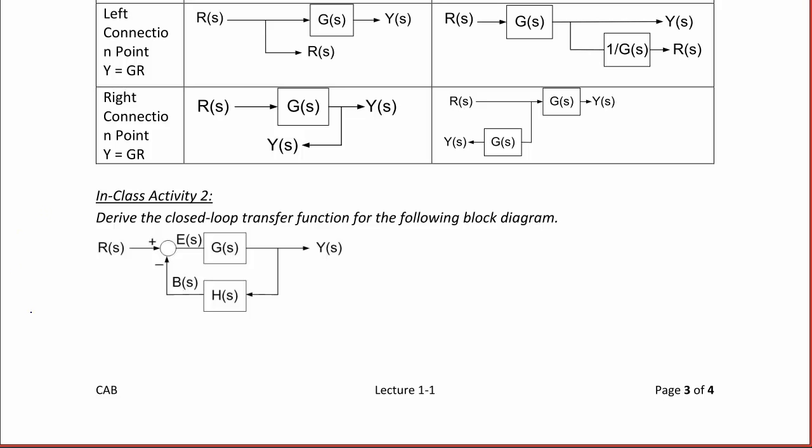So the equation we're going to derive is that T(s) equals Y(s) over R(s). So the error signal, E(s), is equal to R(s) minus H(s) times Y(s). That's our first equation.